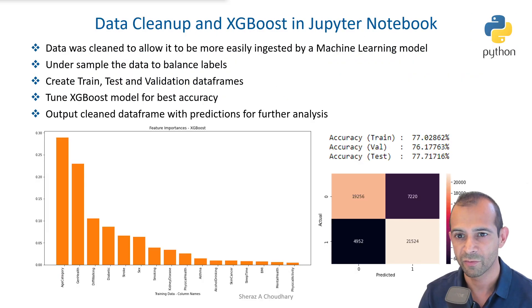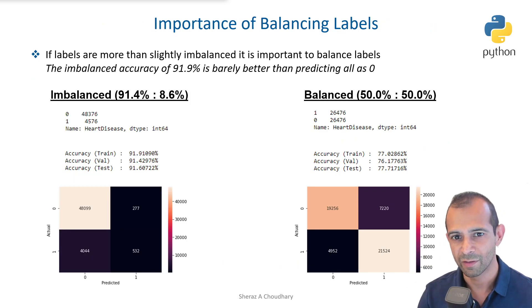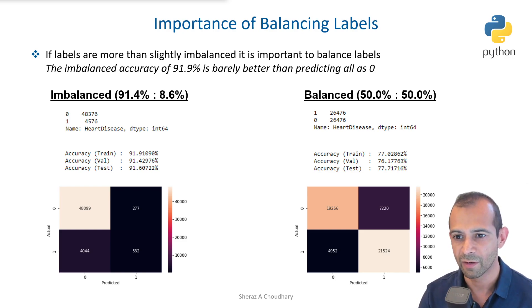Here's the Kaggle dataset. In Python I did some cleanup, and as you will see, this data was also very imbalanced. The imbalance on the left-hand side caused a lot of issues, so on the right-hand side is data that's been balanced using undersampling.